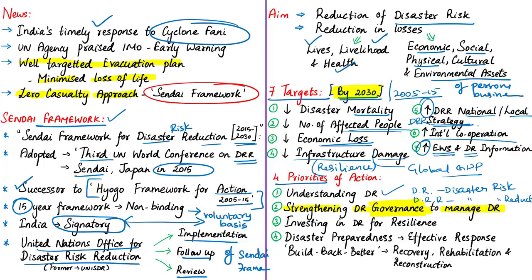Priority three is investing in disaster risk reduction for resilience — public and private investment in disaster risk prevention and reduction through structural and non-structural measures. These are essential to enhance economic, social, health and cultural resilience of persons, communities, countries and their assets as well as the environment. Priority four focuses on enhancing disaster preparedness for effective response and building back better in recovery, rehabilitation and reconstruction.